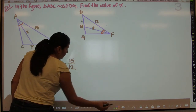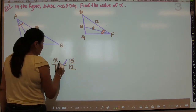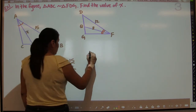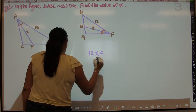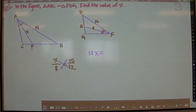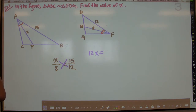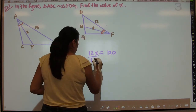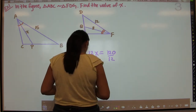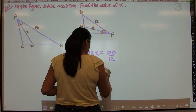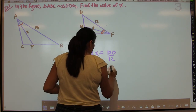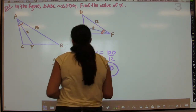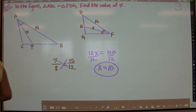Solving the proportion, we get 12X equals 8 times 15, which is 120. Dividing 120 by 12 gives us 10. So X equals 10, and that's all we needed to find.